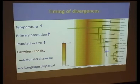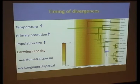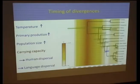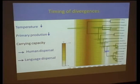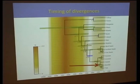When temperature rises, primary production rises, making it possible for larger population sizes to be sustained in the same area until carrying capacity is reached. People then need to start dispersing, and with human dispersal the language is also dispersed. Pretty much the same thing happens when the climate starts cooling — carrying capacity is reached more quickly because primary production is already declining. So again, carrying capacity is reached, human dispersal occurs, and language divergences follow.